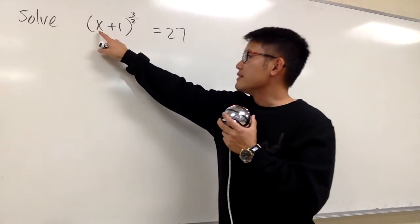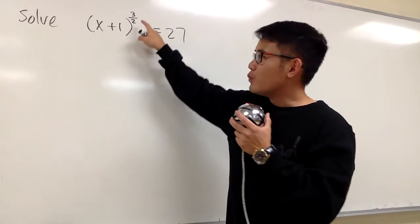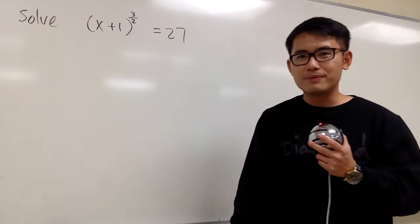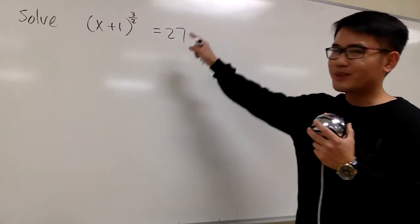As you know, the x is inside here of this parentheses, and we have to take up this power first. How can we get rid of this power? Let me show you guys the fastest way for this question.